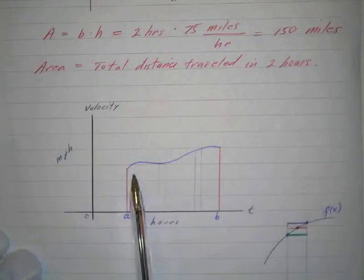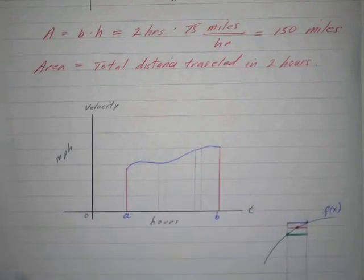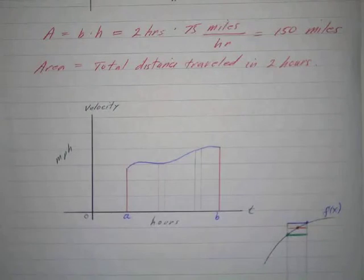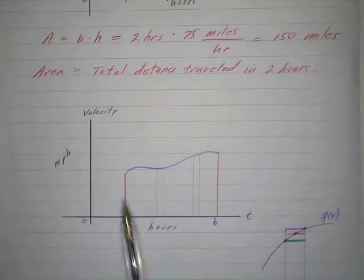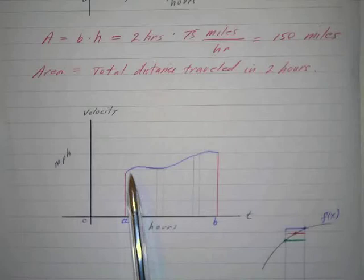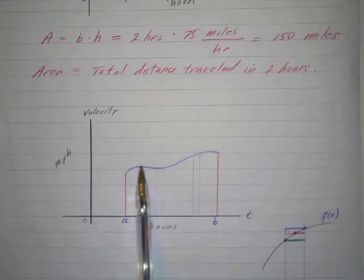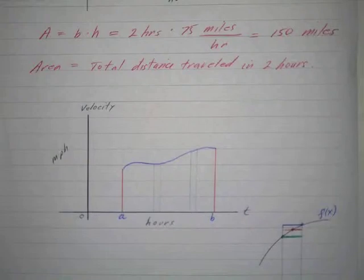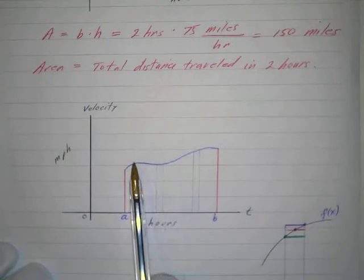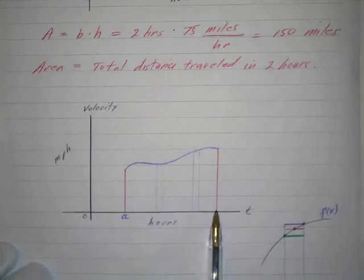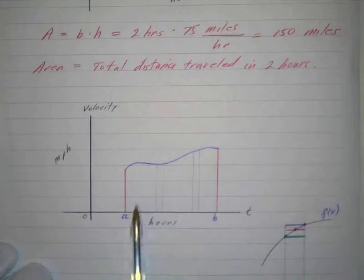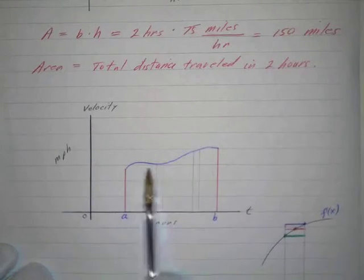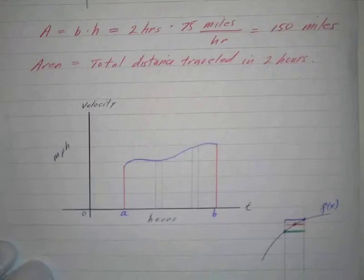If we divided this up into a lot of little rectangles — and they show some illustrations of this in the book on page 264 — you can see a curve divided up into little rectangles. If we could find the area of all these rectangles, it would be a fairly good approximation for the area under this curve. So we'll be dividing this interval into subintervals, then finding the area of these rectangles and adding them up to get an approximation for the area under the curve.